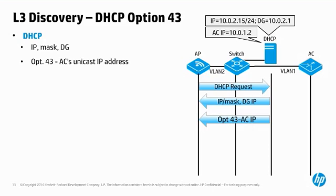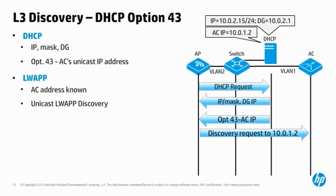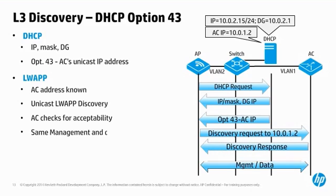Assuming you have your infrastructure configured properly, there is nothing special to do with the AP. You can take a brand new AP out of the box, mount it, and connect it to a properly configured switch port. The AP automatically gets its addressing information and the IP address of the AC. Since it knows the unicast IP address of the AC, it sends an LWAP discovery message directly to that address. Everything else happens the same as for L2 discovery: the AC checks acceptability, sends a discovery response, firmware is updated if need be, and configuration parameters are sent to the AP. The AP then begins to operate as normal.